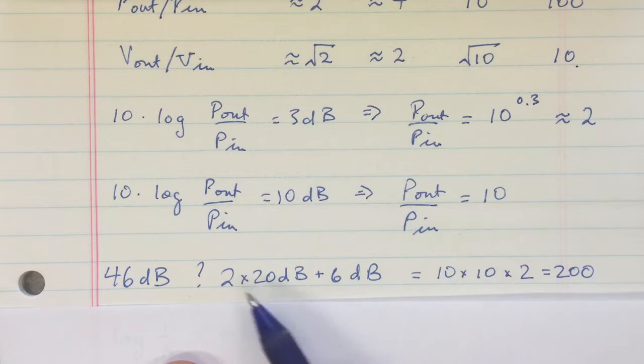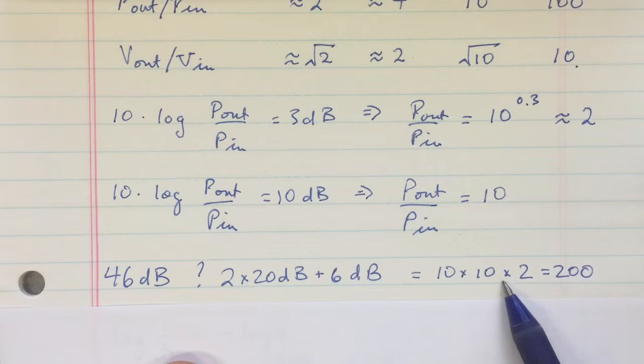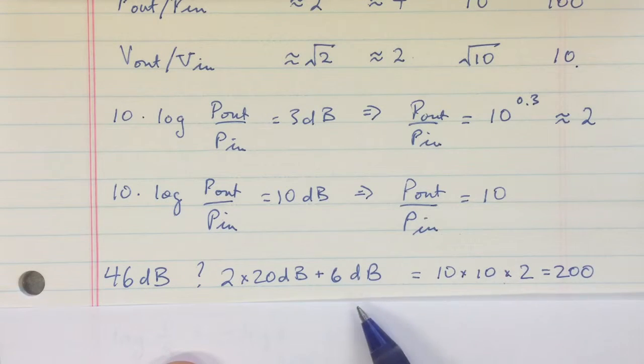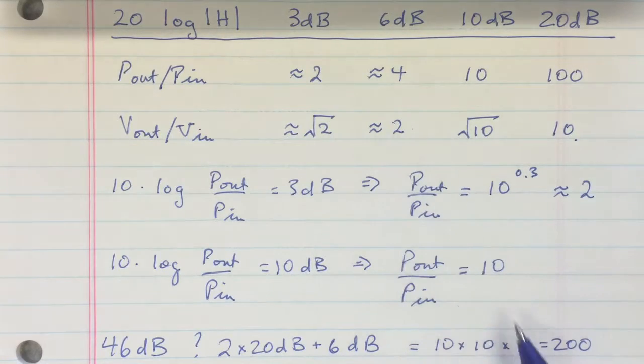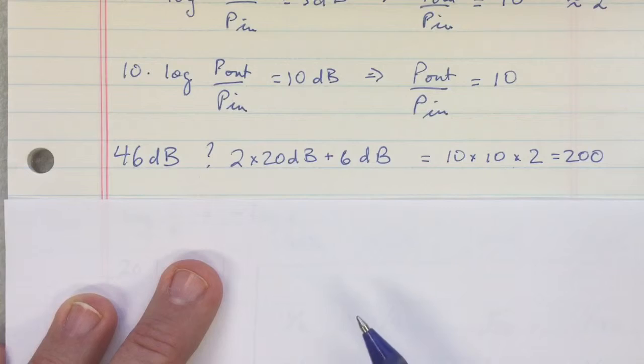And so you get that twice, so it's ten times ten. And then you add in another 6 dB, which corresponds to a voltage ratio of two. And so it's ten times ten times two, or a factor of two hundred.